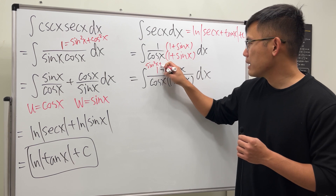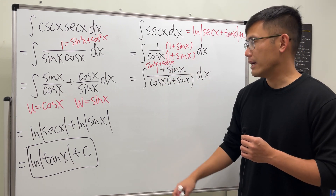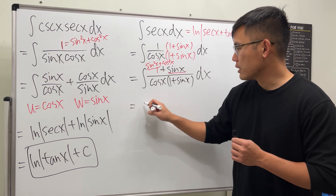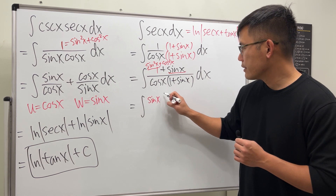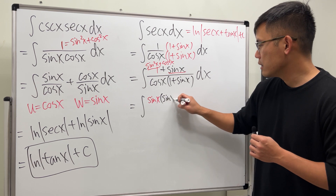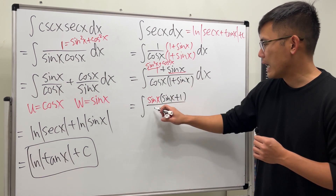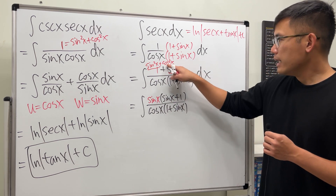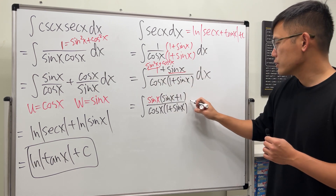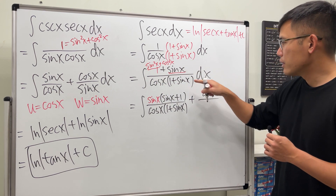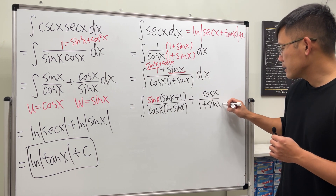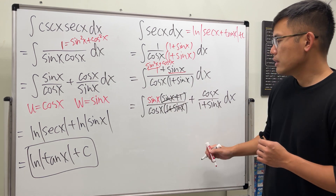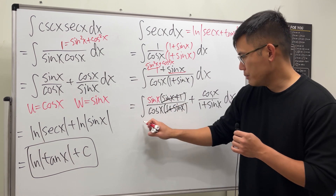Now I'm going to write one as sine squared x plus cosine squared x. Look — sine squared x factors with one of the sine x terms, giving us sine x times one plus sine x, plus one. Over the denominator cosine x times one plus sine x. For the other part we have cosine x over cosine x times one plus sine x, and that cosine x cancels, leaving one over one plus sine x. They are very similar, and better yet, terms cancel.